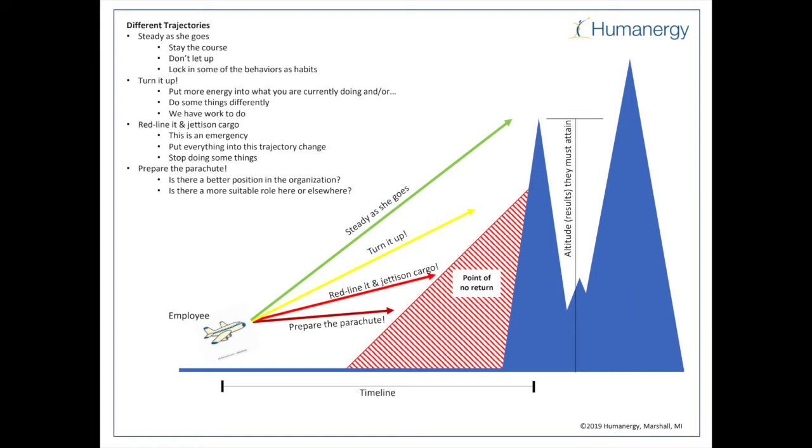If we go slightly lower than that, we have a yellow line which doesn't quite go over the first mountain. We call that the turn it up line because we need to put a bit more energy into what we're currently doing and/or do some things differently. We have some work to do, but it's not lethal yet. You should be able to make that.